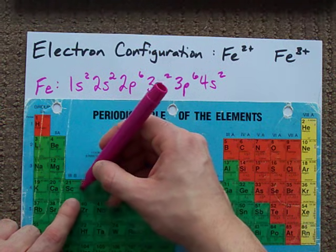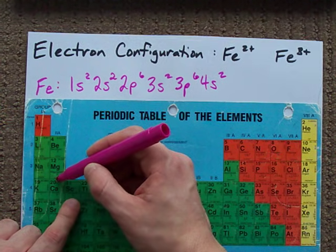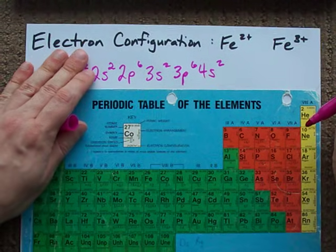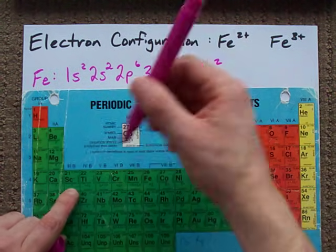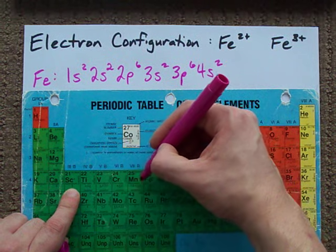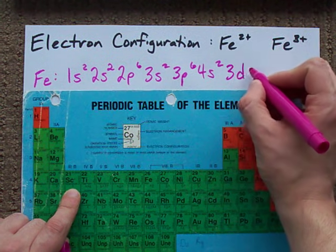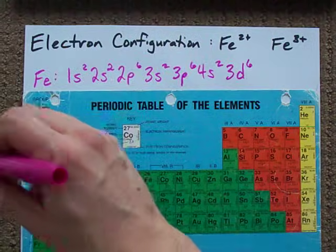And then we get into this D block. Now this is actually the 3d, even though it's in the fourth row of the periodic table, because of the way that the electron configurations work. 1, 2, 3, 4, 5, and it's the sixth element in that D block. So we have 3d6.